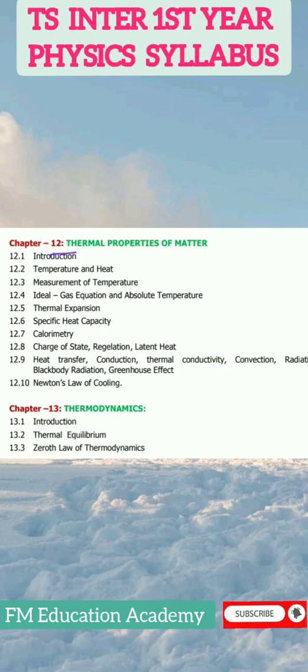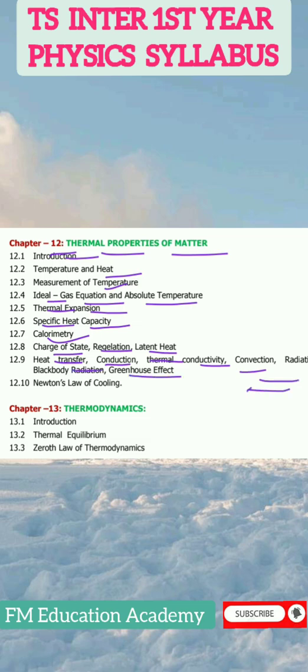Chapter 12, Thermal Properties of Matter: Introduction, temperature and heat, measurement of temperature, ideal gas equation and absolute temperature, thermal expansion, specific heat capacity, calorimetry, change of state, regelation, latent heat, heat transfer, conduction, thermal conductivity, convection, radiation, black body radiation, greenhouse effect, and Newton's law of cooling.